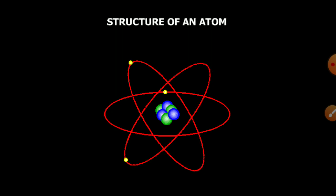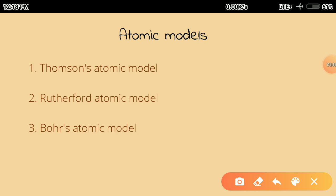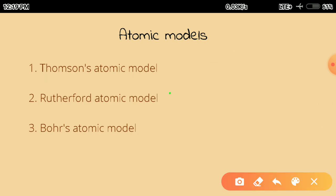First we go through the Thomson atomic model, in which we define the model proposed by Thomson. Then we go through the Rutherford atomic model, which covers two more topics: the alpha scattering experiment and the alpha particle trajectory.